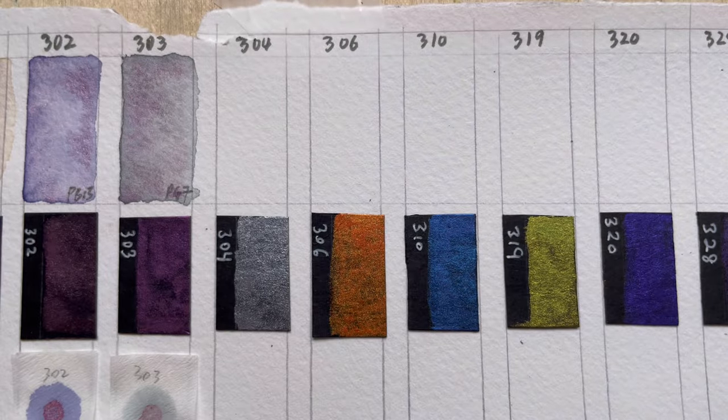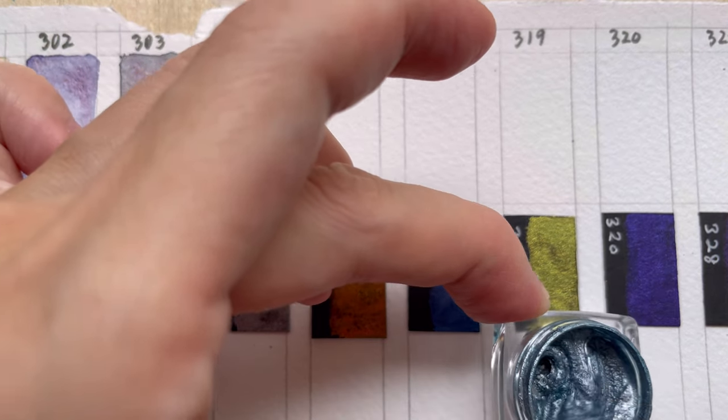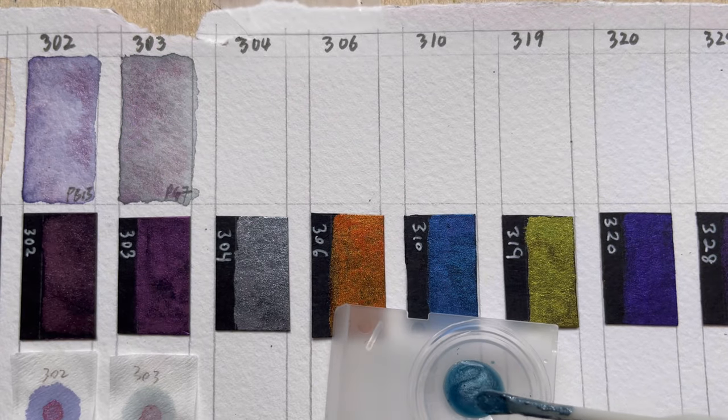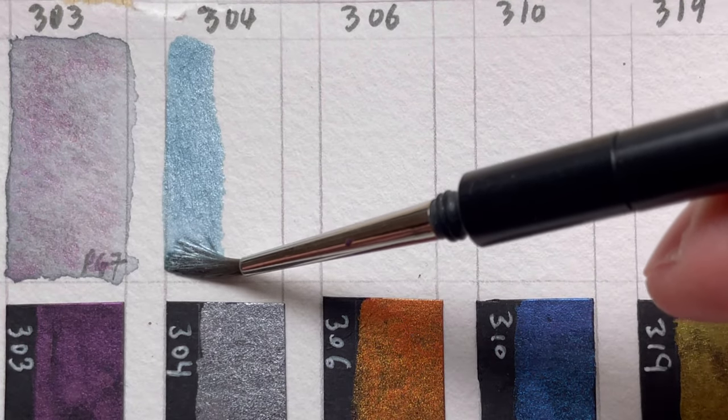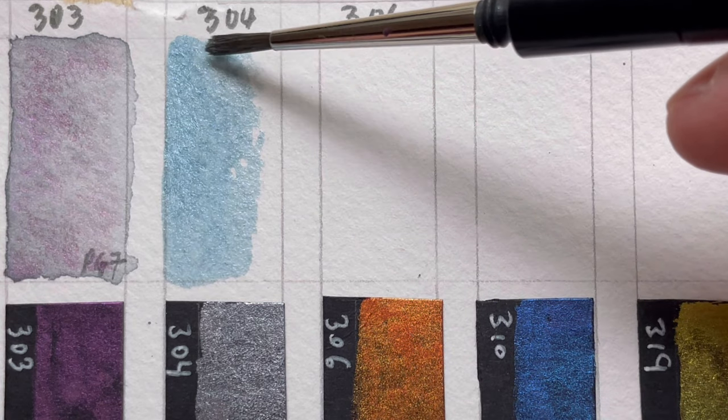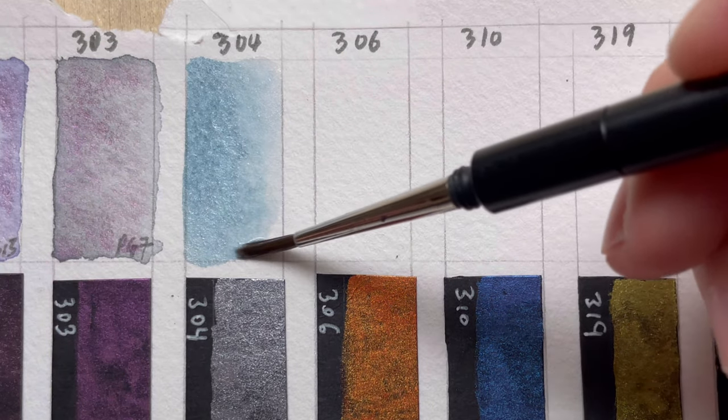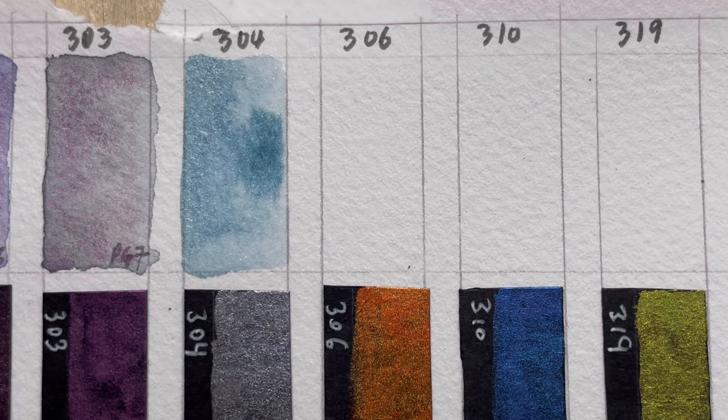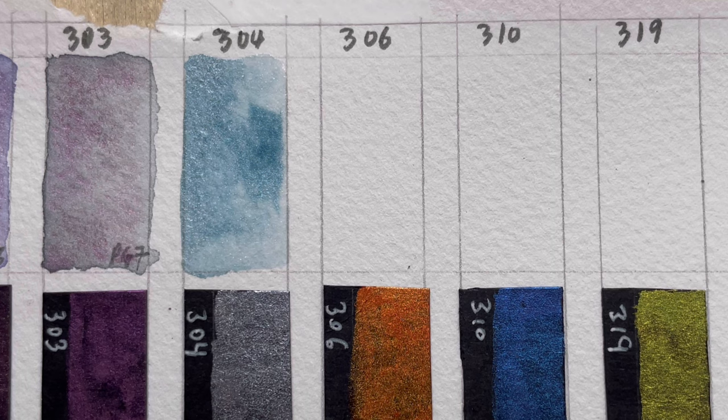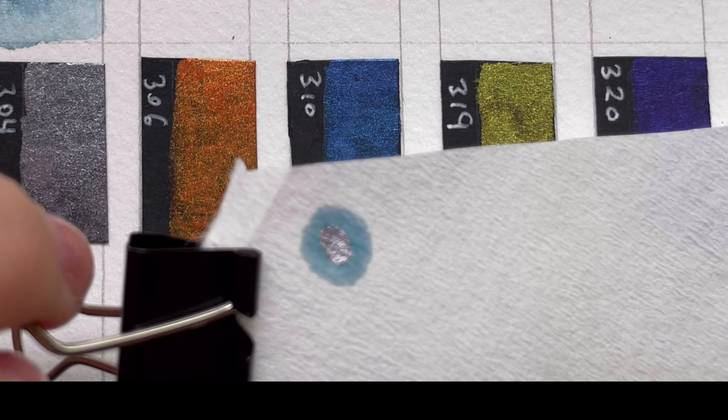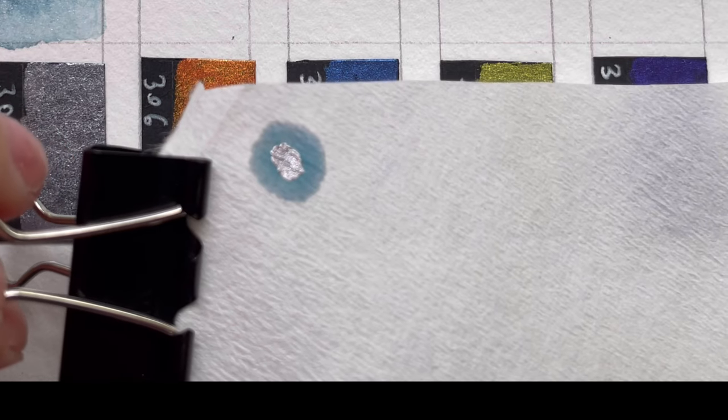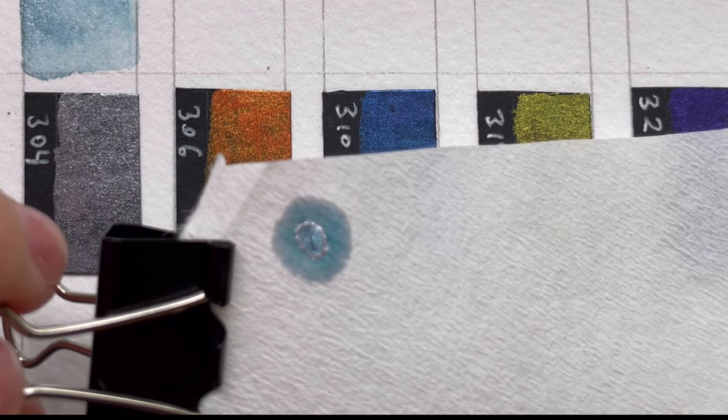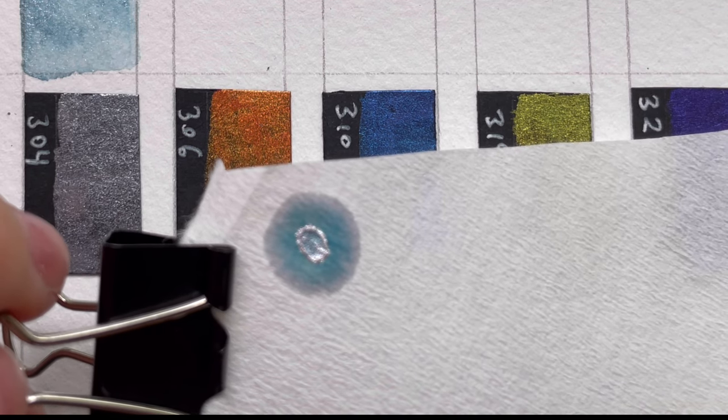The next color is 304. 304 is made up of Mika, PG7, and PB15. We've already seen PG7 and PB15. The color looks like a steel blue with some sort of silverish shimmer on top. In the chromatogram, you can actually see three rings. The inner ring is made of the silver shimmer followed by an outer ring of green and finally blue and a bit of purple.